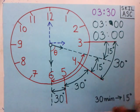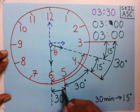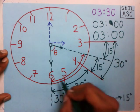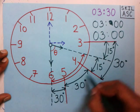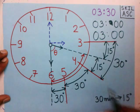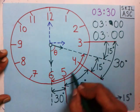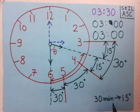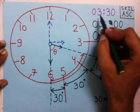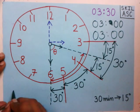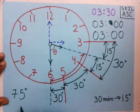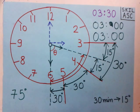Now we have found out all three angles. The three angles are 30, 30, and 15, which add up to 75 degrees. So the angle between the hour hand and minute hand at time 3:30 is 75 degrees. I hope you have understood this. Thanks for watching.